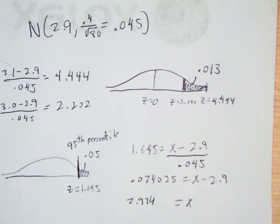And you get 2.974. So if the mean of the fleet is 2.974 grams per mile or greater, then it's in the top 5% in that sampling distribution.